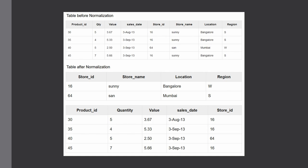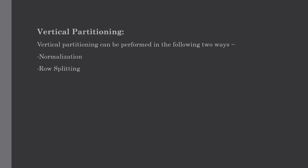The last type in vertical partitioning is row splitting. Row splitting tends to leave a one-to-one map between the partitions. The motive of row splitting is to speed up access to a larger table containing billions of records by reducing its size. An important point: when using vertical partitioning you have to make sure there is no requirement to perform a major join operation between two partitions.